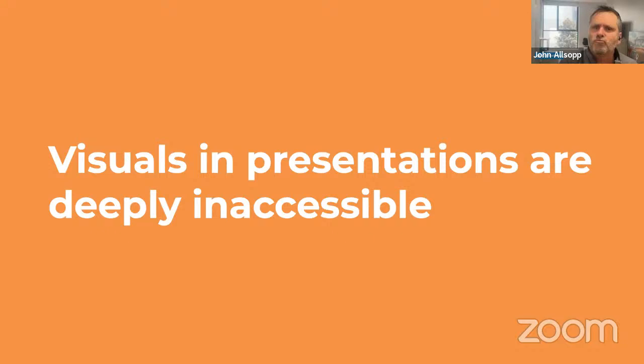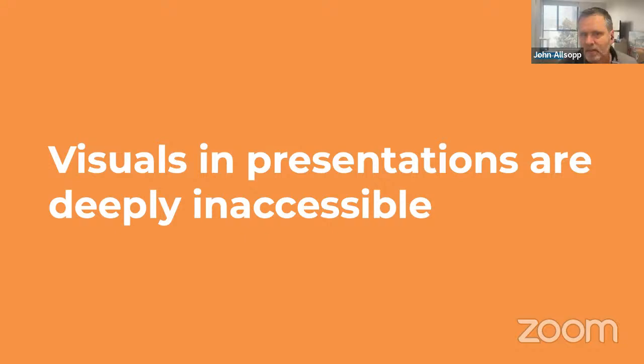I want to go a bit deeper, because we rarely talk about the really visual nature of a presentation and how inaccessible these can be for folks with visual disability. How much of the information, the context, even the subtlety and humour of a presentation is on a slide? Slides are completely inaccessible — they have no accessibility object model, they are just bits on a screen. Screen readers and other assistive devices can't read them, let alone describe a meme GIF or a graph.